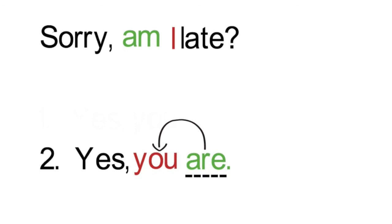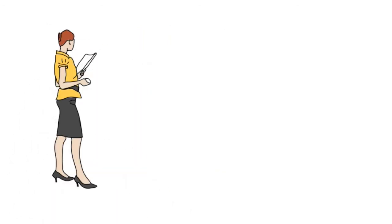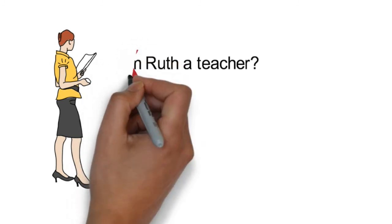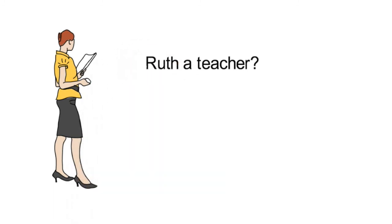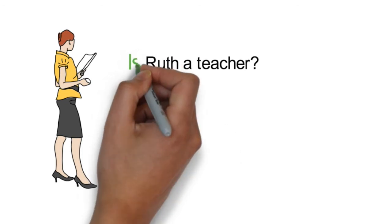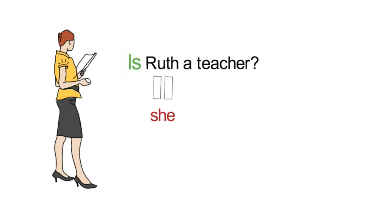Let's try another question. Am Ruth a teacher? What is wrong with this question? That's right. Am is not the correct form of to be for the singular noun she. It should be is. The correct question is Is Ruth a teacher? Now, choose the correct answer to this question.